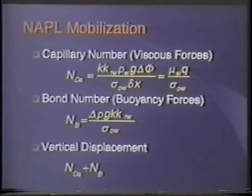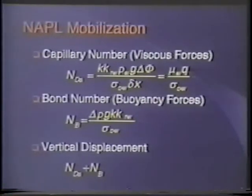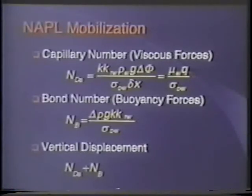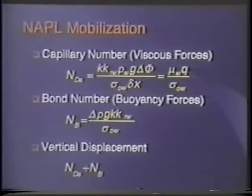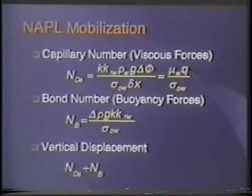The way you can analyze this is by using dimensionless numbers, again borrowing from the oil industry. A capillary number relates the viscous forces — the force of the water flowing — to the capillary forces. There's also a bond number relating the buoyancy force to the capillary forces. Our contribution is that we scaled them so they're additive on a macroscopic scale. In our vertical column, the gravity force and viscous forces act together in the same direction against the capillary forces.